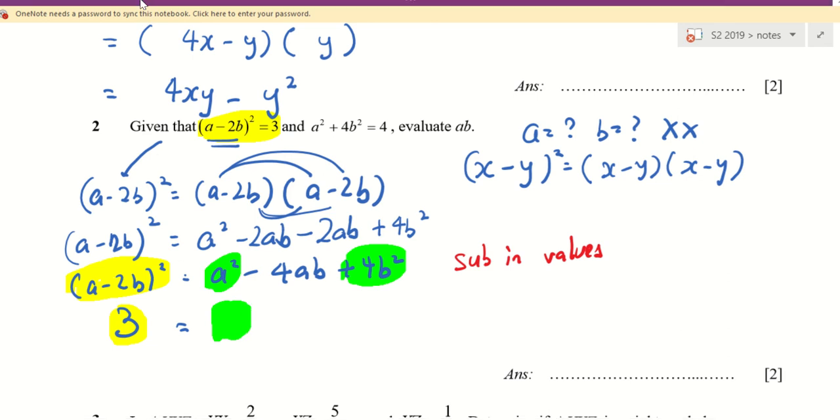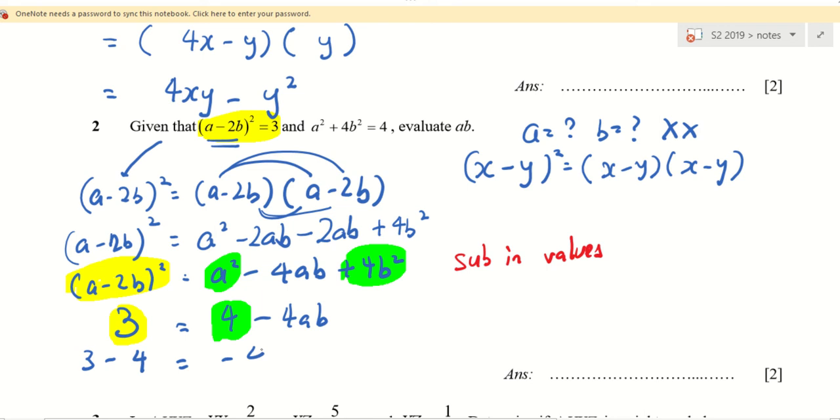Minus 4AB. So now I want to find AB. So now it becomes a simpler equation already. I want to find AB. That means I don't want the four, I don't want the first four here. What do I do on both side? Plus or minus? Minus. Who don't understand minus? So I minus 4 on both side. 3 minus 4 equals to minus 4AB. Calculator will tell me minus 1 equals to minus 4AB.